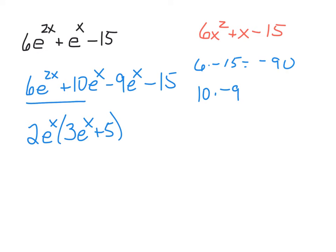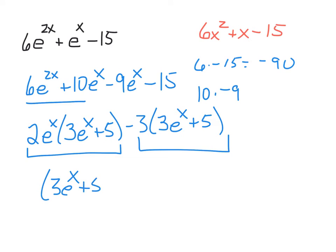And now I'm going to take out a negative 3. Just the greatest common factor I can. That leaves me with a 3e to the x plus 5. We now have these two terms that both have a common factor being 3e to the x plus 5. And when we take that out, we're left with 2e to the x minus 3.